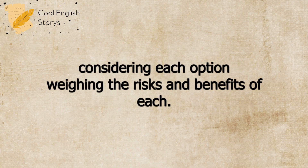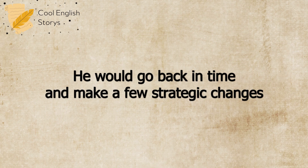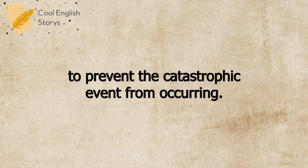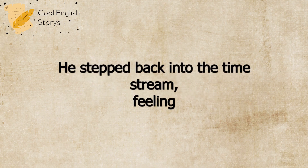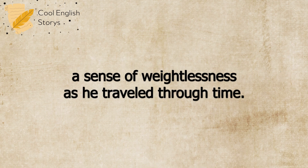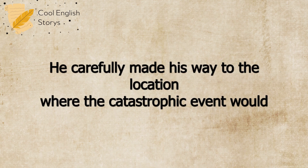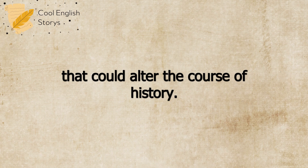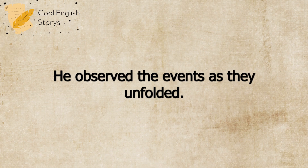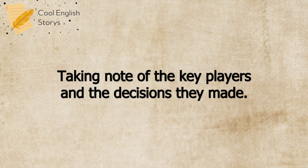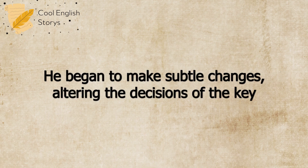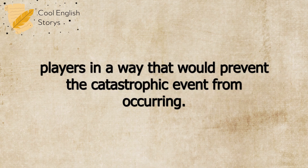He spent several hours considering each option, weighing the risks and benefits of each. He knew that the fate of the world rested on his decision. Finally, he made his choice. He would go back in time and make a few strategic changes to prevent the catastrophic event from occurring. He stepped back into the time stream, feeling a sense of weightlessness as he traveled through time. He emerged in the year of the catastrophic event, ready to make his changes. He carefully made his way to the location where the catastrophic event would occur. He observed the events as they unfolded, taking note of the key players and the decisions they made. He began to make subtle changes, altering the decisions of the key players in a way that would prevent the catastrophic event from occurring.